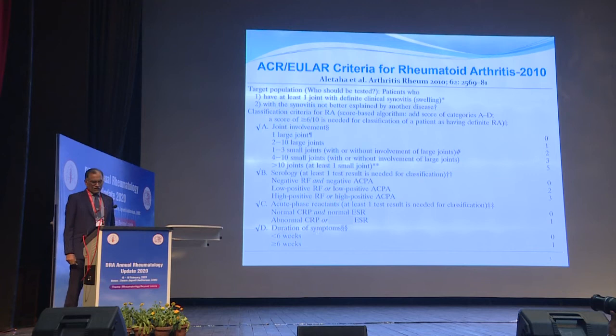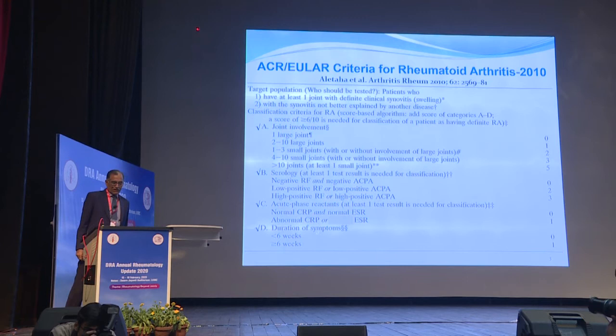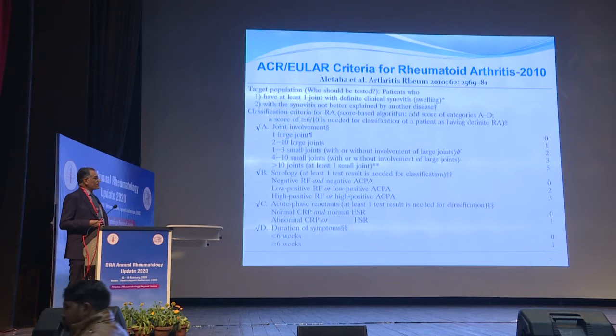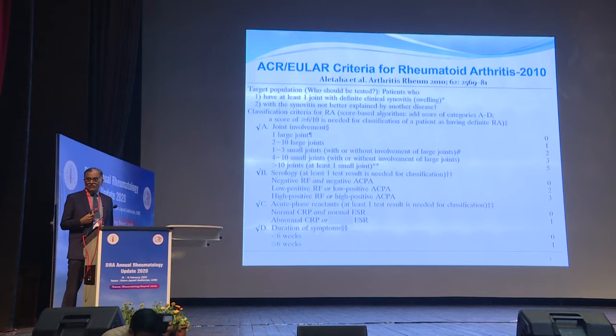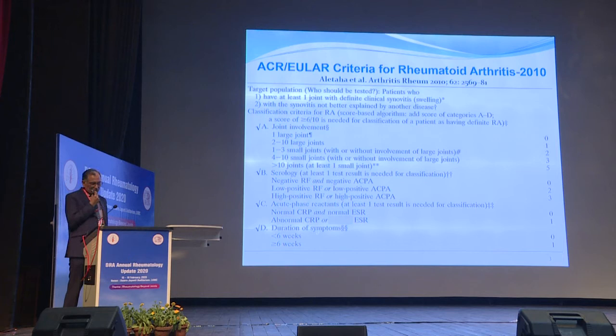These criteria are already now 10 years old. It is worth noting where the shift has taken place: you give weightage not only to the number of joints but also to which joints — small versus large. You can have 2 to 10 large joints and get only a score of 1, whereas 1 to 3 small joints get twice the weightage.